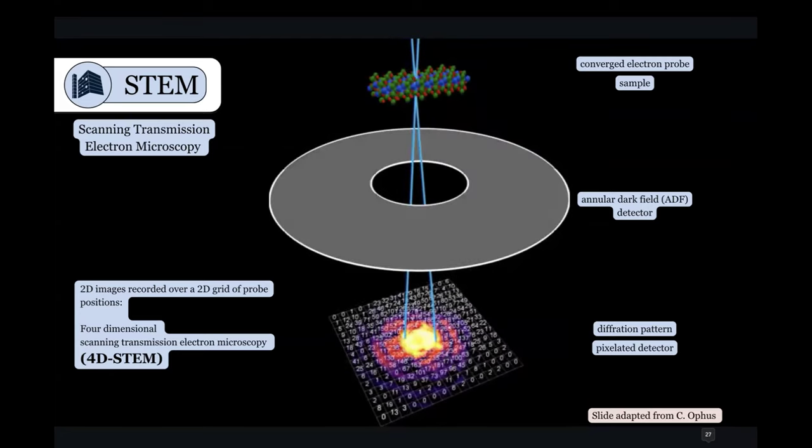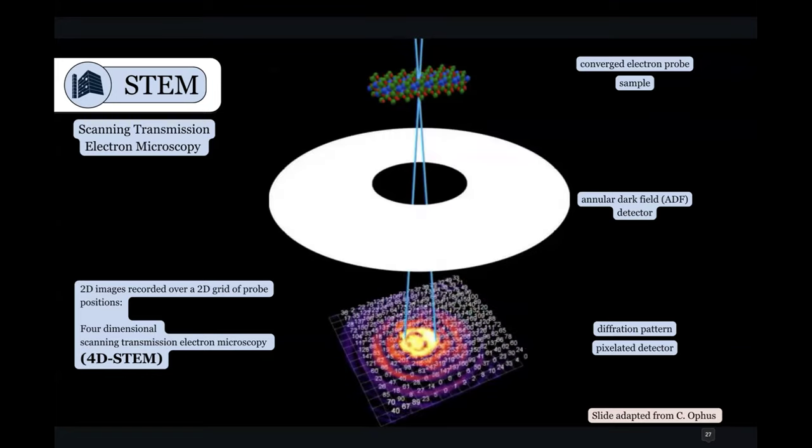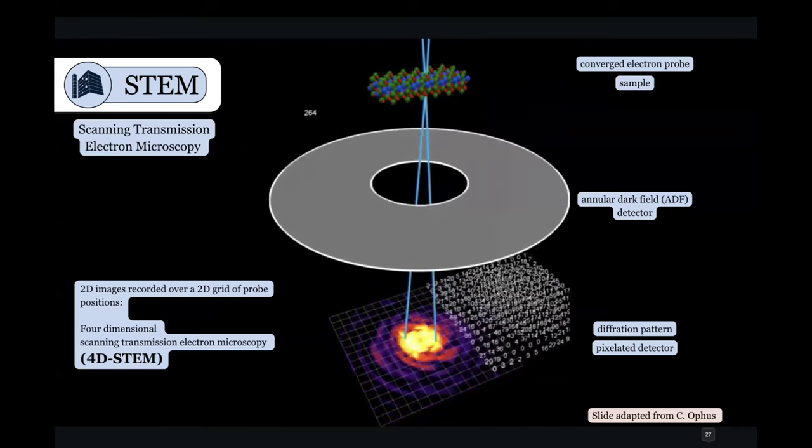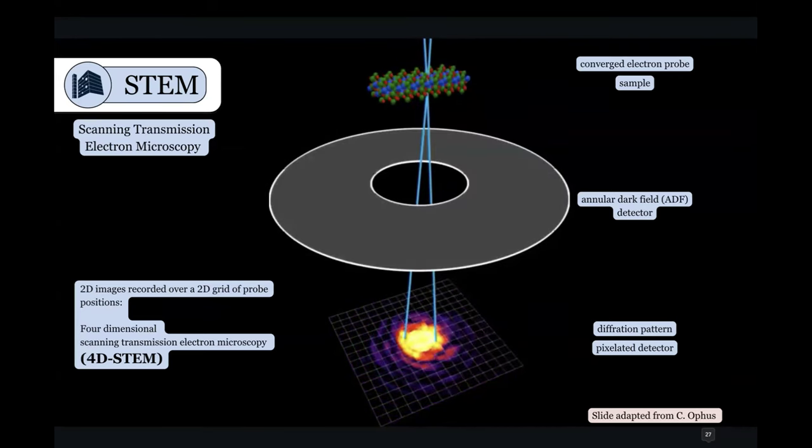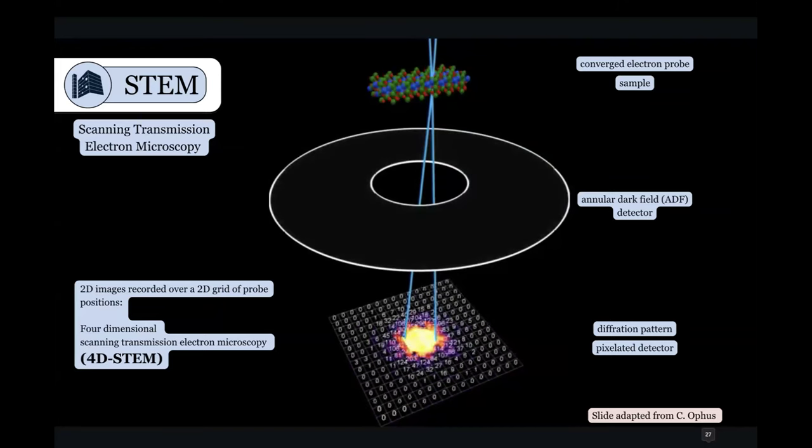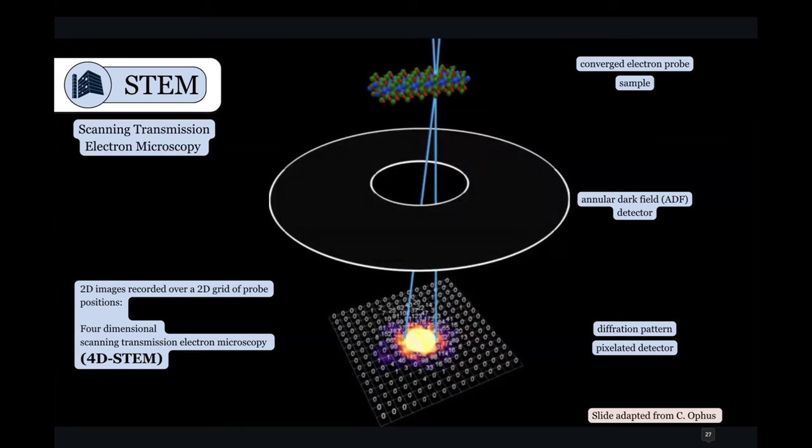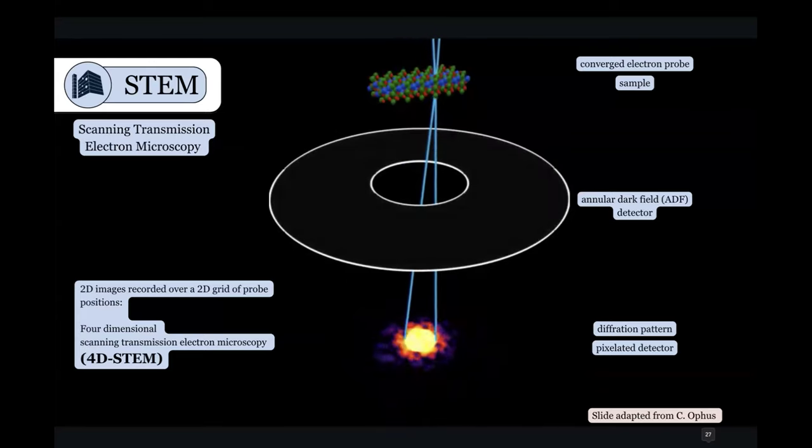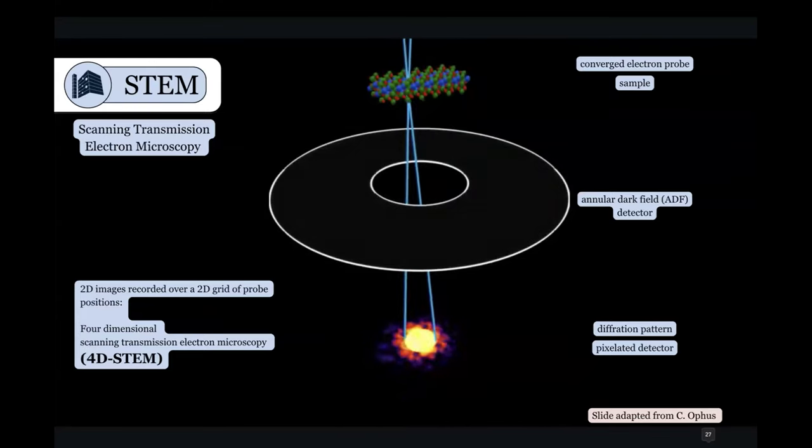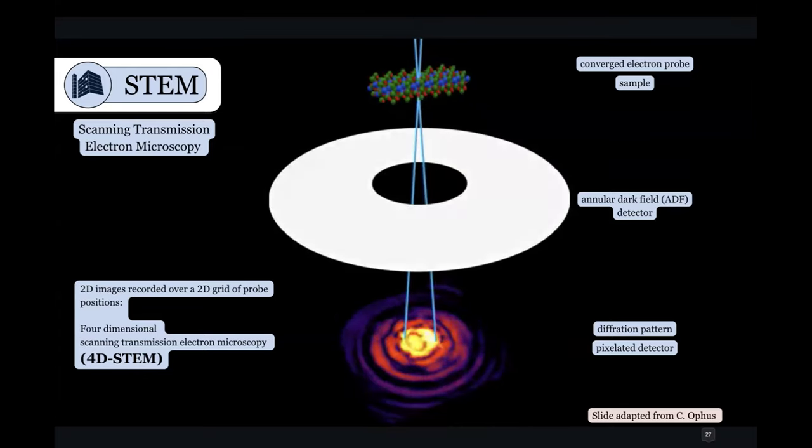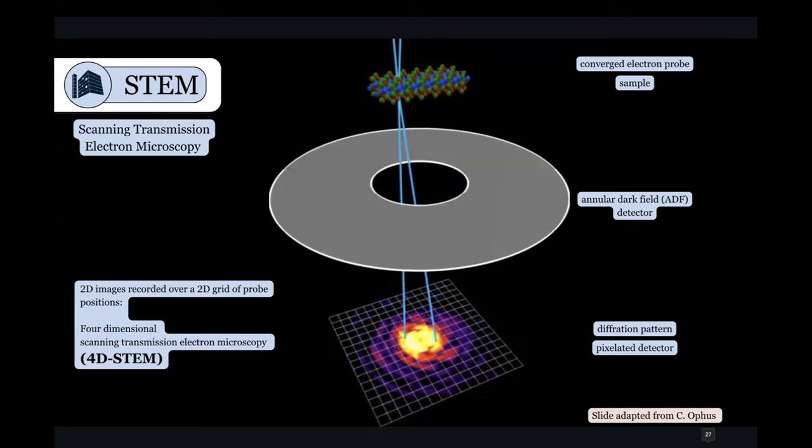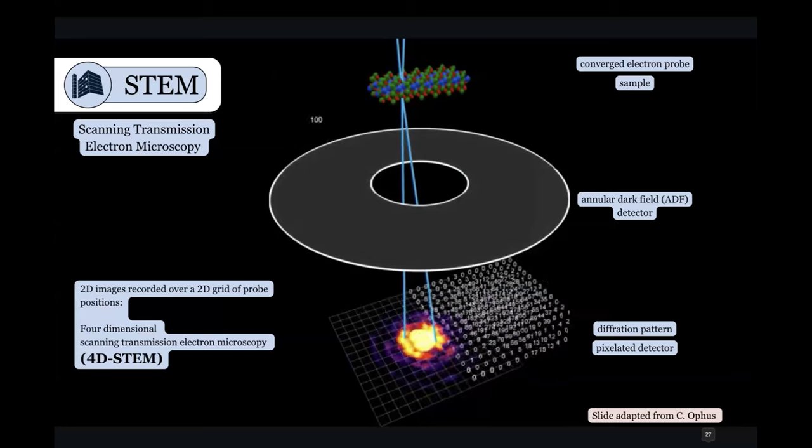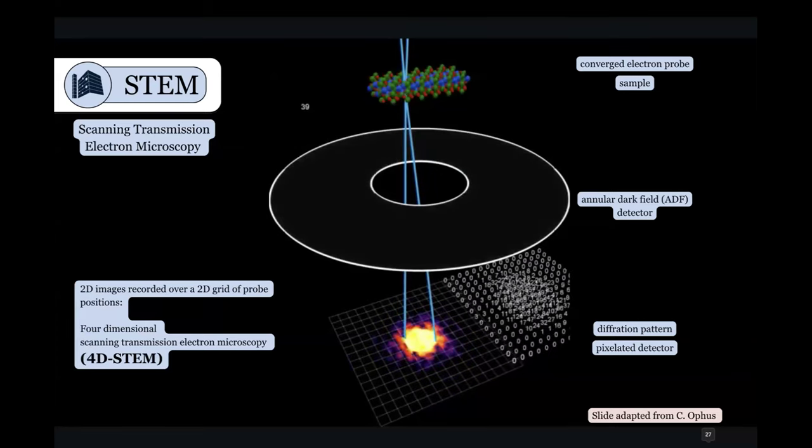And so in kind of the conventional detector technology, one of these detectors that you can put in is called an annular dark field detector. And what that does is at every point along the surface of this sample, you're collecting the scattered electrons that are coming off of the sample around a ring at relatively high angles of scattering. And when you hit one particular probe position, you collect all of them, and you get one piece of information. That's how many electrons hit that detector at that probe position.